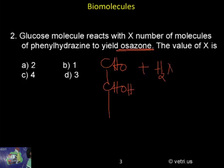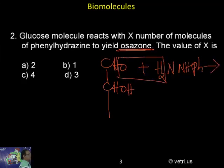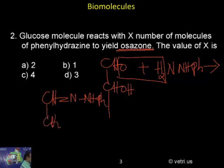N, NH, C6H5. What is happening? It is undergoing condensation to produce CH double bond N, NH, Ph, then this CHOH.